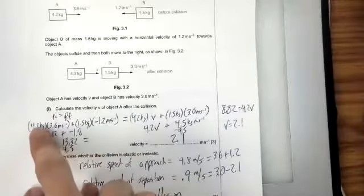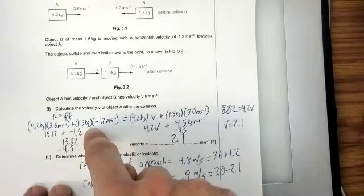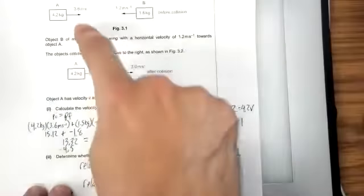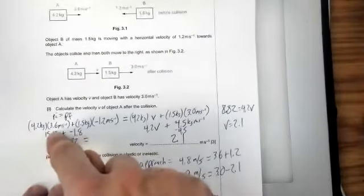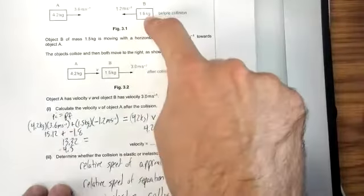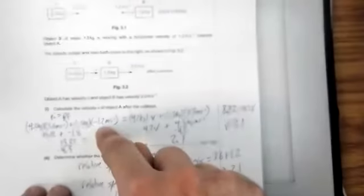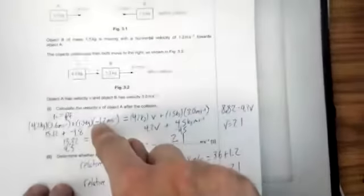So the initial momentum is the sum of the individual momentum of all the objects. So object A here has a mass of 4.2, and I'm calling to the right positive. So positive 3.6 is its velocity. I add this initial momentum. So 1.5 kilograms traveling at a velocity of negative 1.2. It's really important to keep track of your sign convention here.